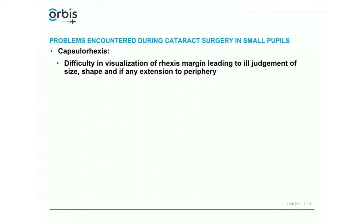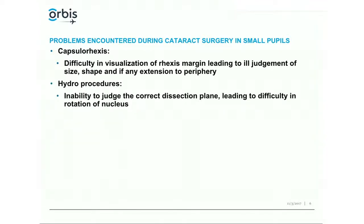With a small pupil, literally every surgical step — except making the tunnel — is affected. The first affected step is the capsulorhexis. If the pupil is 2-3 mm, you would not want to do a rhexis of 3 mm size. At 4 mm with experience you can still manage, but the pupil is definitely a problem because you can make misjudgments in size and shape and may not even know if it has extended too far into the periphery. Hydrodissection also suffers — there is inability to judge the correct dissection plane, leading to difficulty in nucleus rotation.